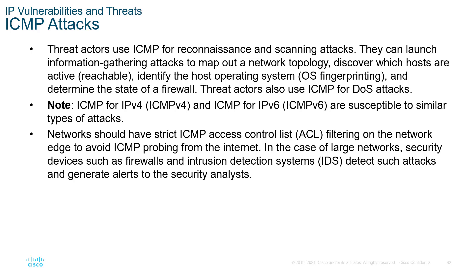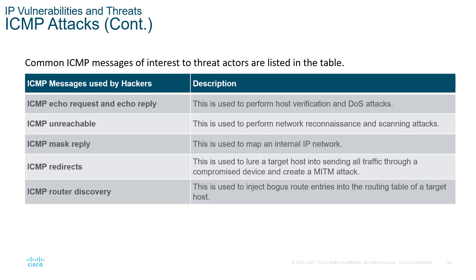ICMP attacks — either ICMPv4 or ICMPv6 — use ICMP for reconnaissance and scanning. You restrict ICMP access via an ACL, IDS, or IPS to prevent information from being gained. Types include echo request/reply, ICMP unreachable for reporting reconnaissance, mask relay for mapping the internal network, redirects used by manual-based attacks, and ICMP router discovery where bogus routes are injected into the route table of unsuspecting victims.